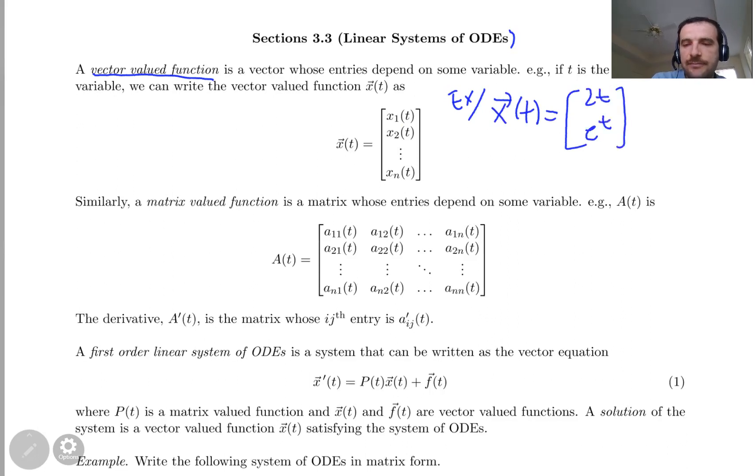Similarly, we define a matrix-valued function. A matrix-valued function is a matrix whose entries are, as it happens in the vector-valued function case, not only numbers but also functions with respect to t. For example, this way.